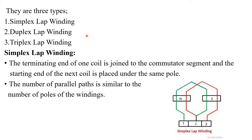Lap windings can again be of three types: simplex lap windings, duplex lap windings, and triplex lap windings. In simplex lap windings, the terminating end of one coil is joined to a commutator segment and the starting end of the next coil is placed under the same pole. The number of parallel paths will be equal to the number of poles — for example, if there are two poles, the number of parallel paths will be two.